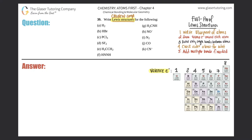Lewis structures are taught differently - every teacher and professor has their own specific way. Some like to write dots as electrons, some draw a line to represent two electrons. I have my own foolproof Lewis structures method that students find easiest to understand. If you use this on your test or quiz it wouldn't be objectively wrong, but check with your teacher to confirm their preferred format.